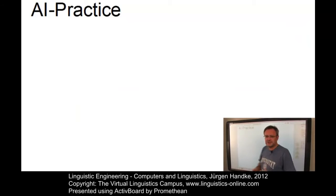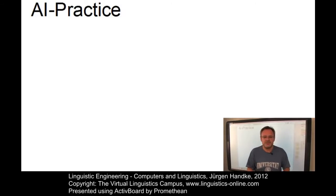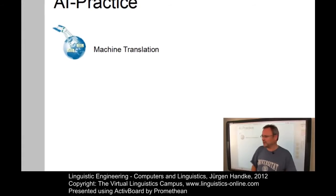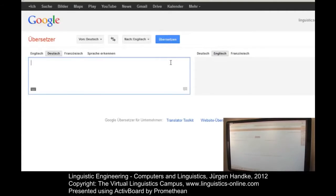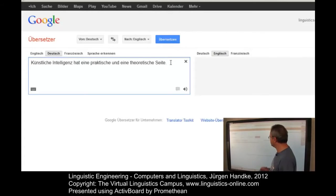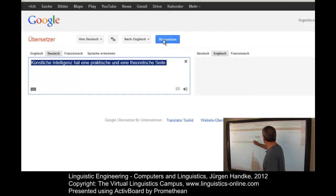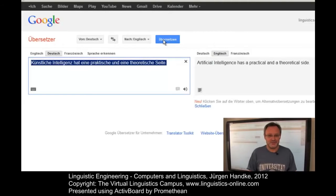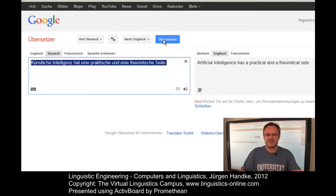The second approach in artificial intelligence is the basis for a variety of practical systems. The first example is machine translation. Machine translation is already there — we use it quite often. Here is a sentence to translate: 'Künstliche Intelligenz hat eine praktische und eine theoretische Seite.' The English solution is: 'Artificial intelligence has a practical and a theoretical side.' We cannot complain about this translation. We will not reveal how this translation is achieved by Google, but this is an important issue in artificial intelligence practice.